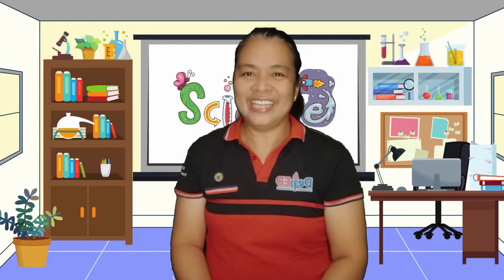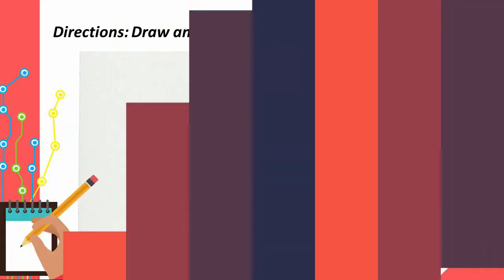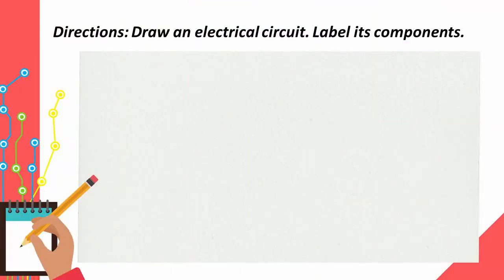Great! You have learned a lot! Kids, here's another activity for you to enjoy. In a short bond paper, draw an electrical circuit and label its components or parts.